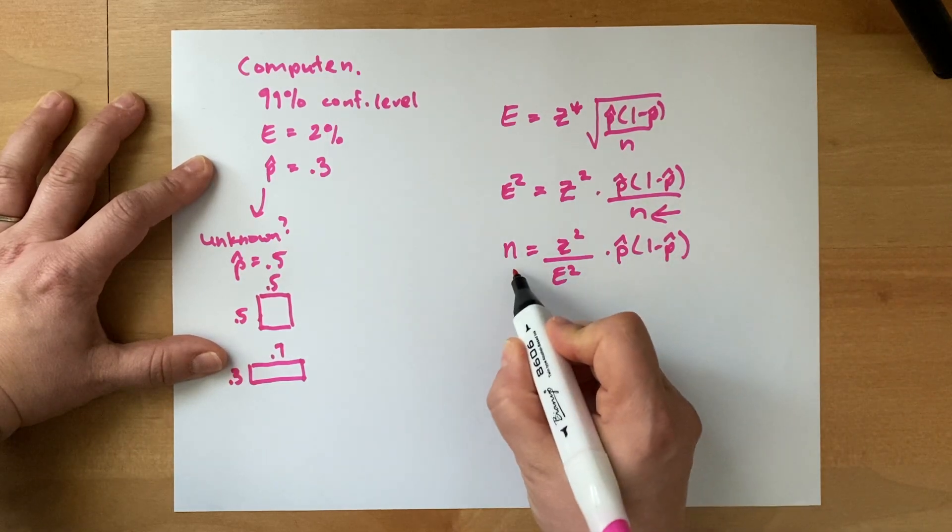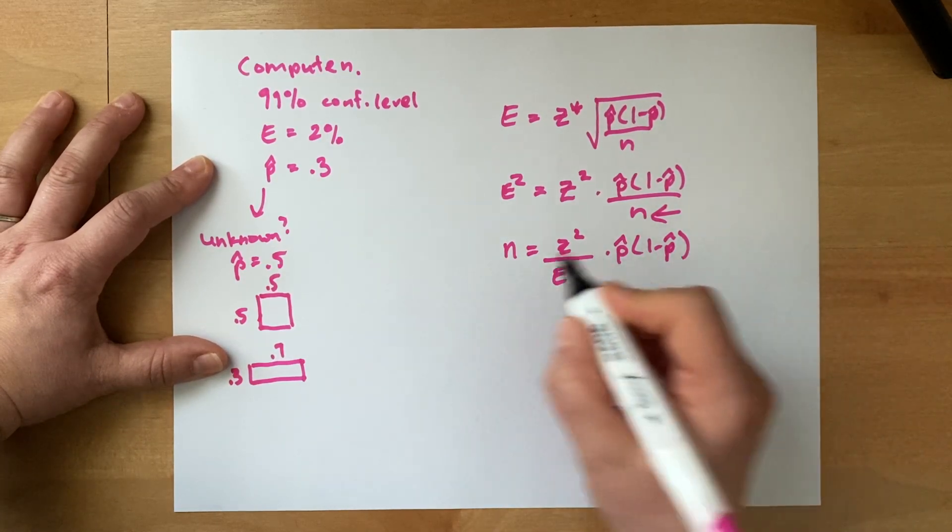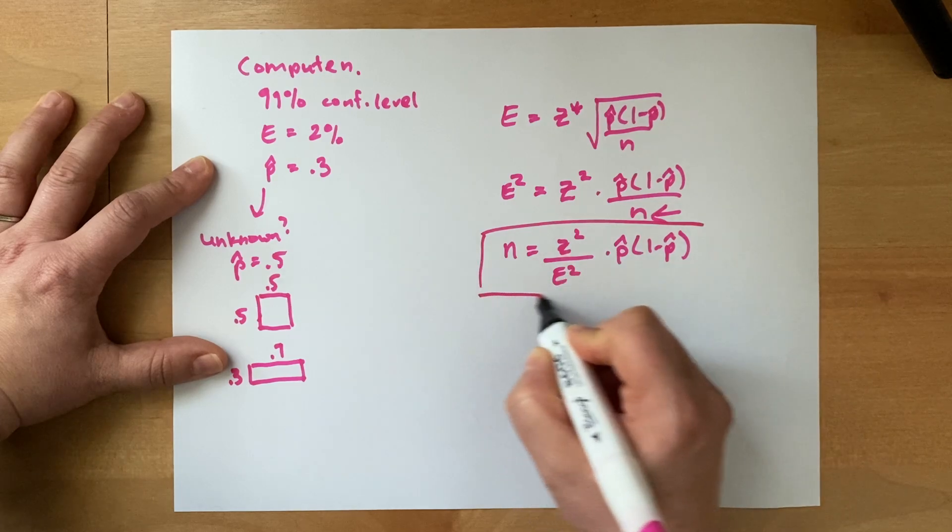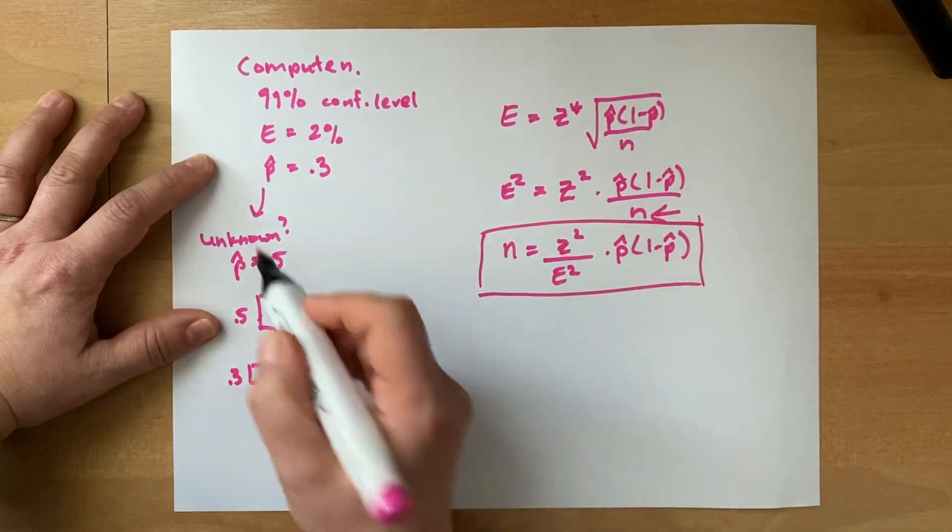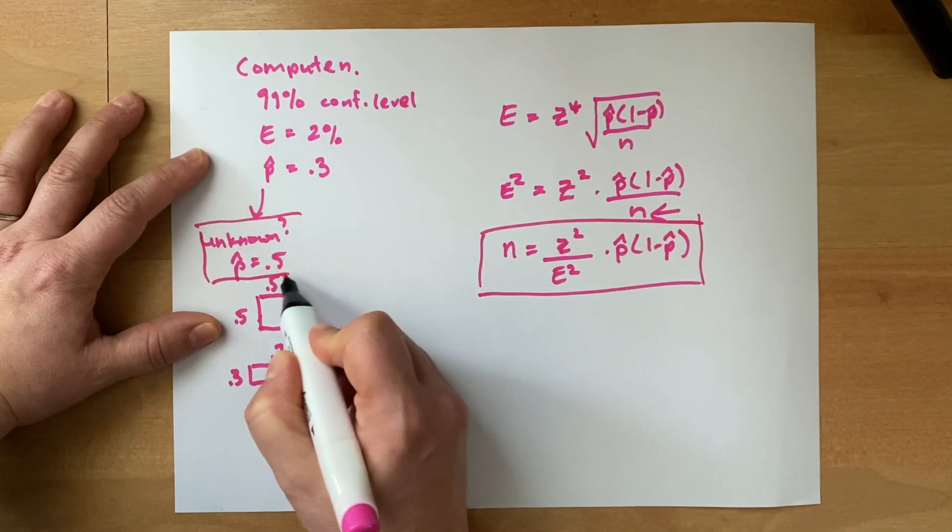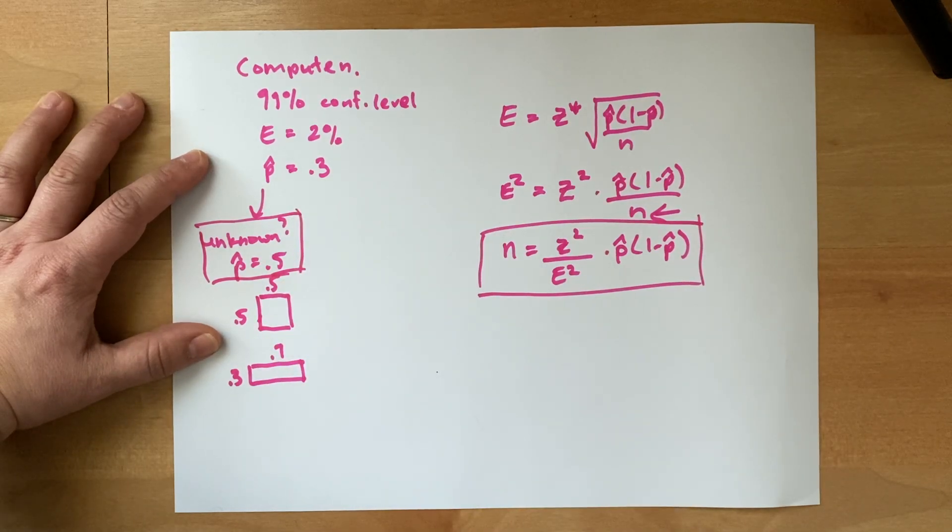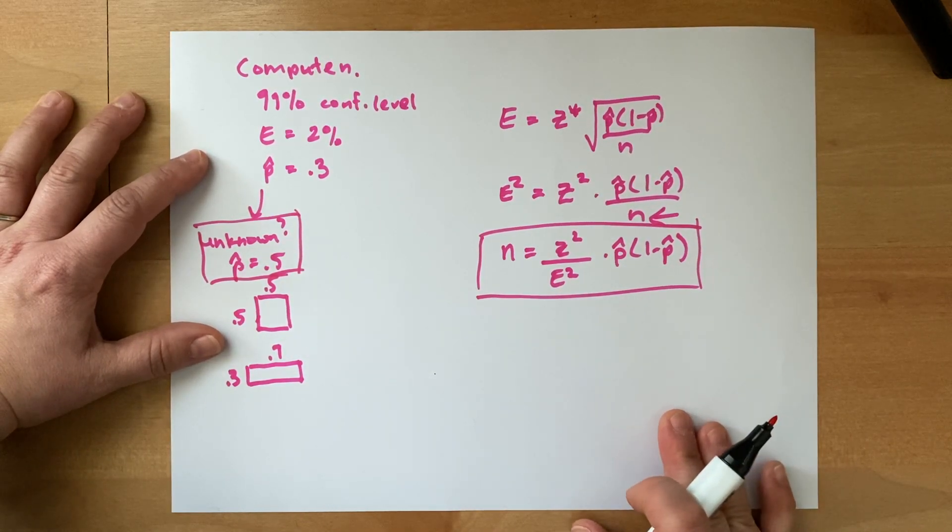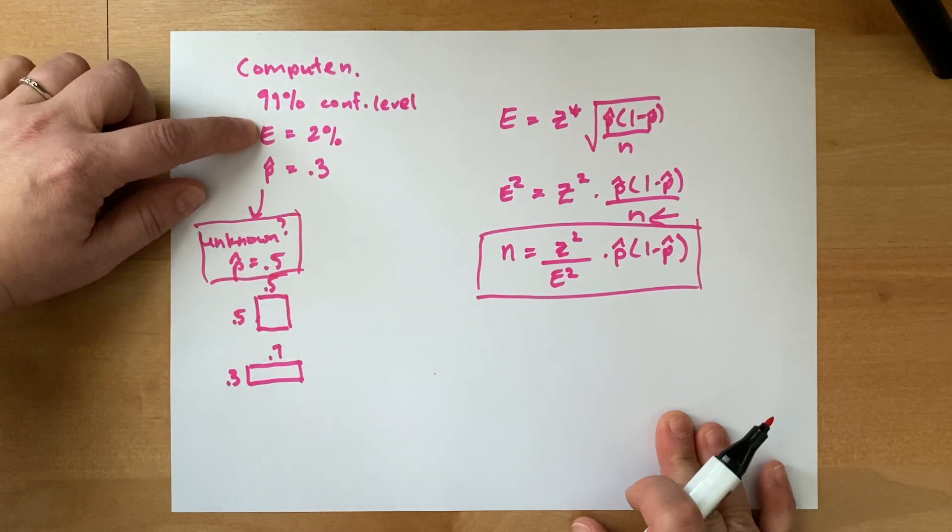Okay, here we are. Here's our formula for n. So this is what you can write down in your notes. And then you can also write down if p hat is unknown, use p hat equal to 0.5.